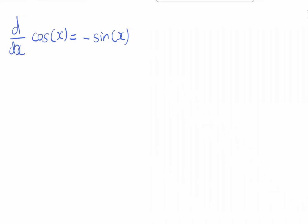Hi everyone, in this video we are going to do the proof of the derivative of cosine x, which is minus sine x, by using the limit definition of derivative. So let's start off: d over dx of cosine x,